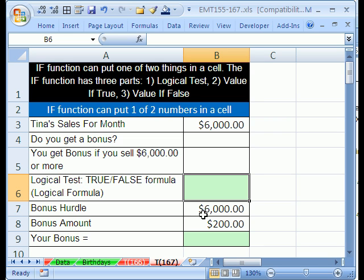The best way to learn about this is to think of a bonus. Here's Tina's sales for the month, $6,000. The question is, does she get the bonus? First we've got to figure out what the hurdle is. You get a bonus if you sell $6,000 or more. So if her sales are greater than or equal to the $6,000 hurdle, if that's true, then she gets $200. Otherwise, she gets zero.